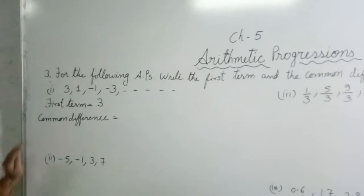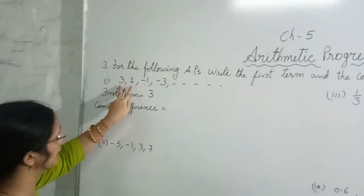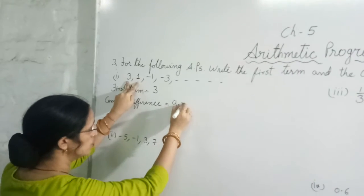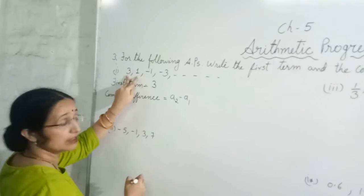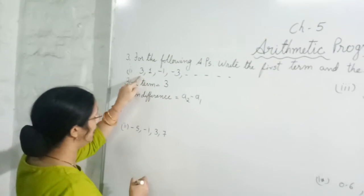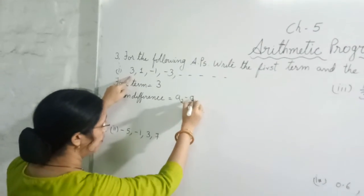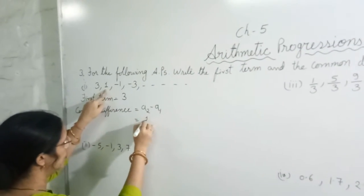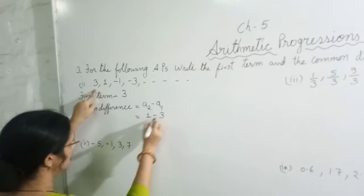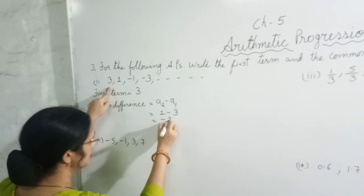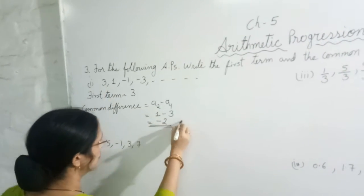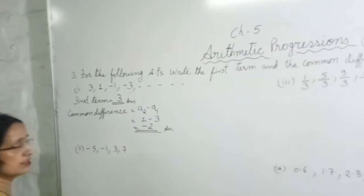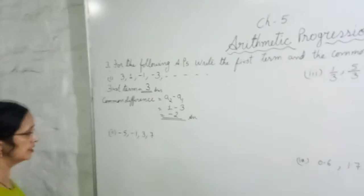The common difference is the difference between successive terms. Here we take the first two terms: a2 minus a1. So a2 is 1 and a1 is 3, giving us 1 minus 3, so the common difference is minus 2. That is your answer.